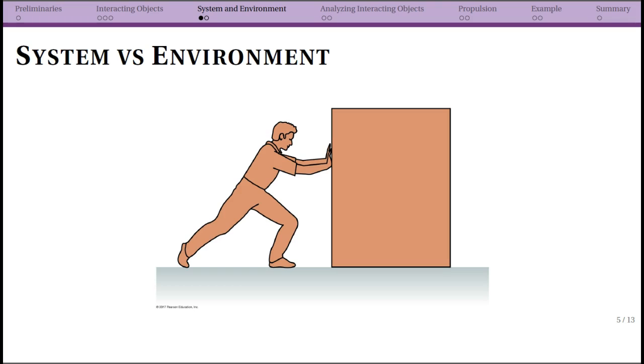Now I want to clarify what we mean when we talk about the system and environment. After we do that, we'll go back to that diagram we started to draw with the pairs of forces, because the final step of that diagram is to actually show what is your environment and what is your system.